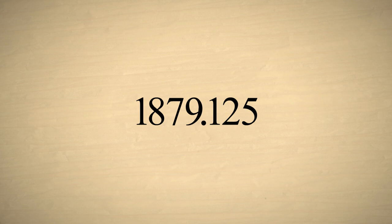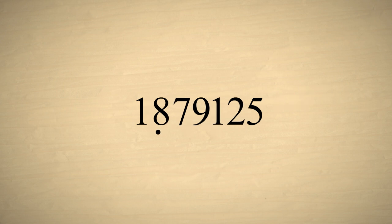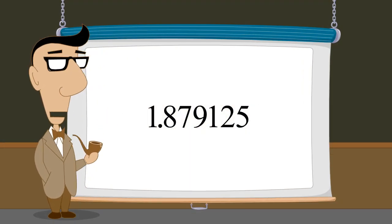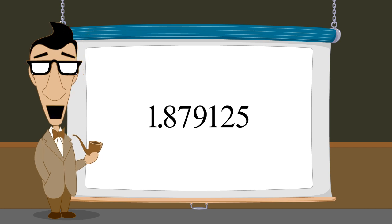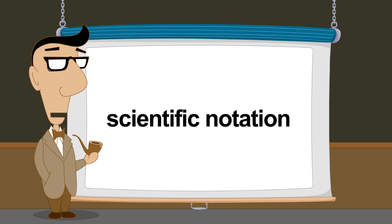The net effect is that the decimal point moves. For example, if we multiply a number times ten to the second power, the decimal point moves two columns to the right. Or, if we multiply a number by ten to the negative fifth power, the decimal point moves five columns to the left. Shifting the decimal point by multiplying by some power of ten is used by engineers and scientists to write numbers in a format called scientific notation.